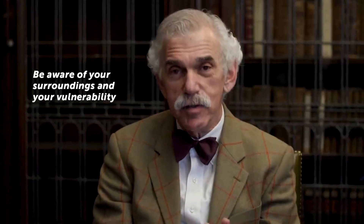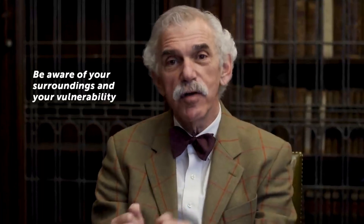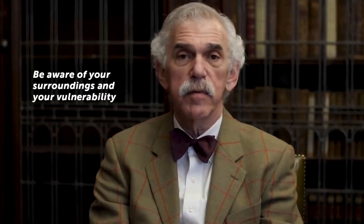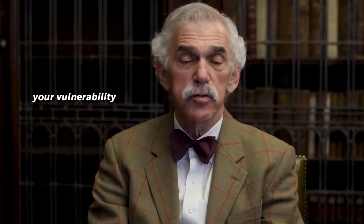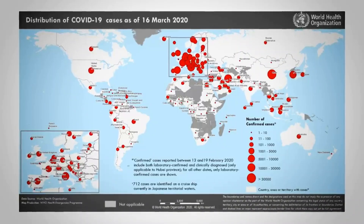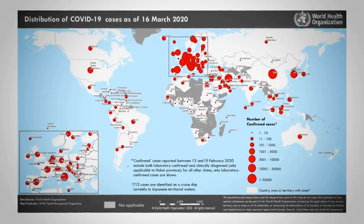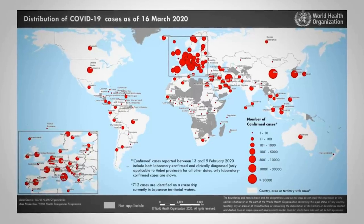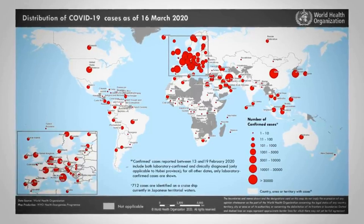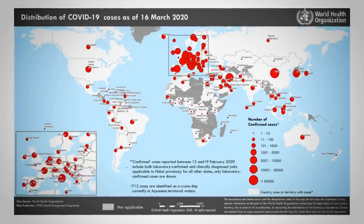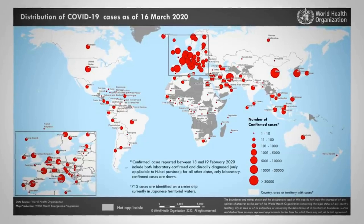Being aware of your surroundings and your place within them is very important. Are you 80 years old? Do you have pre-existing conditions? Have you been in contact with somebody who has traveled to an area where there's an outbreak — and that could be even within the United States? Being aware of your surroundings and your place in them is what an individual can do.